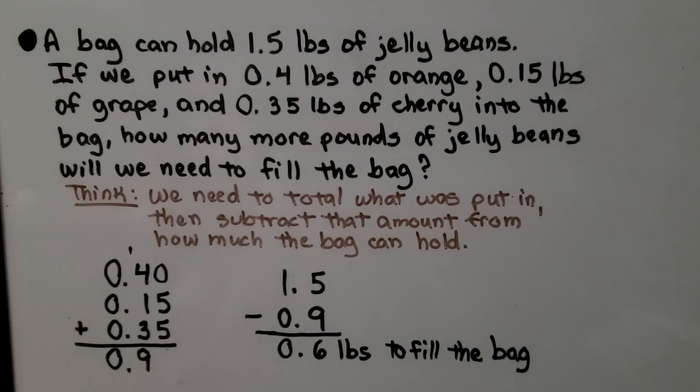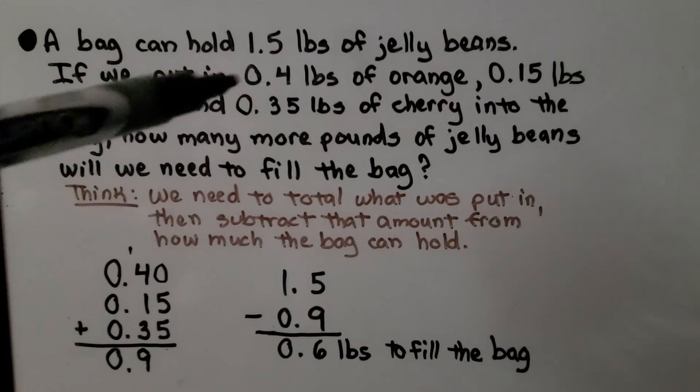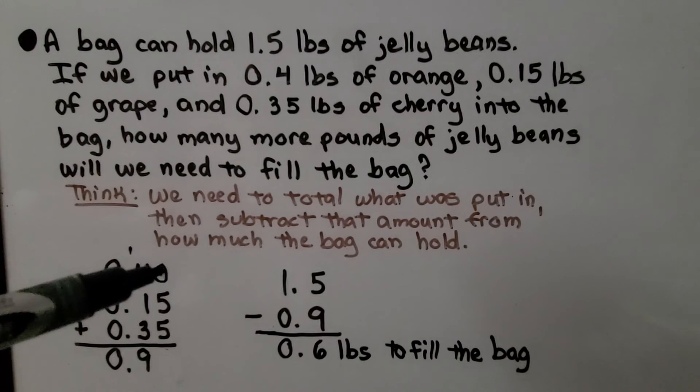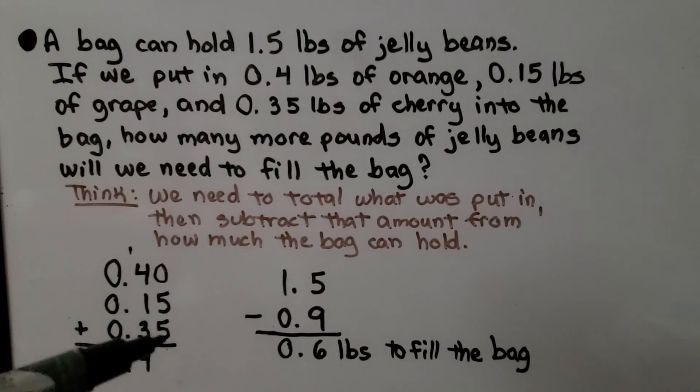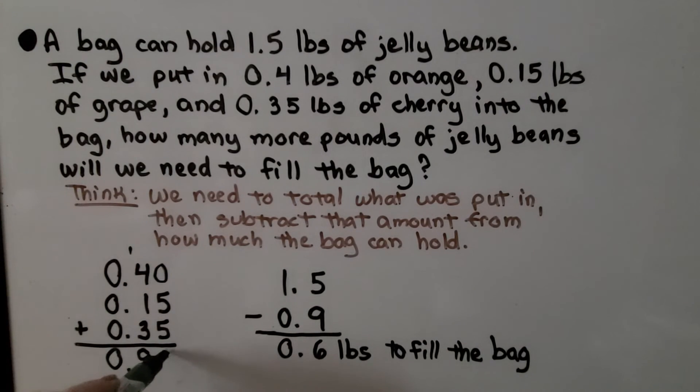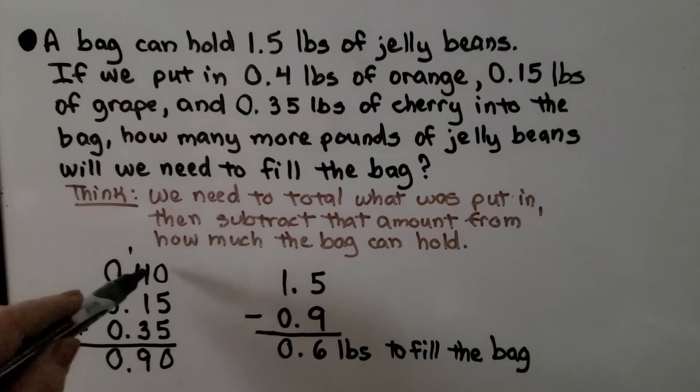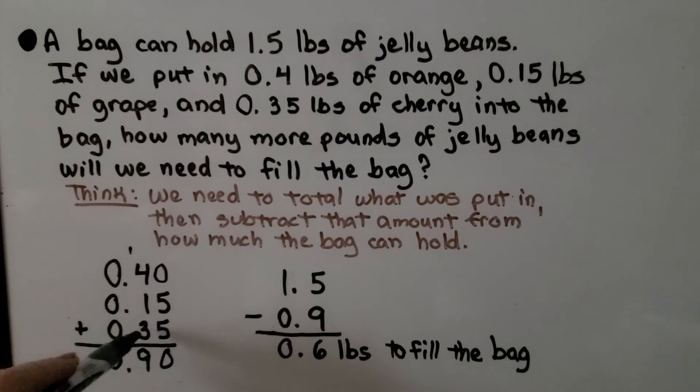We add the 4 tenths. We put a zero here if we need to as a placeholder. And we have 5 and 5 is 10. We regroup. We can put the zero here. We have 4, 5, 6, 7, 8, 9. We know that zero is just a placeholder.